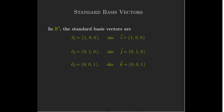In R3, again, e1 has a 1 in the first place, e2 has a 1 in the second component, and e3 has a 1 in the third component. Another name for e1 is i, another name for e2 is j, and another name for e3 is k.